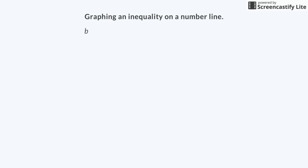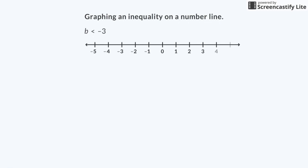Let's graph an inequality with a negative number. How would we graph b is less than negative 3? Graphing an inequality with a negative number is the same as graphing an inequality with a positive number. I draw a number line from negative 5 to 5. Then I draw an open circle at negative 3 to show it is not included in the solution. Then I draw an arrow that extends to the left, because numbers less than negative 3 are to the left of negative 3 on the number line. My graph shows that the solutions of the inequality are all less than negative 3.